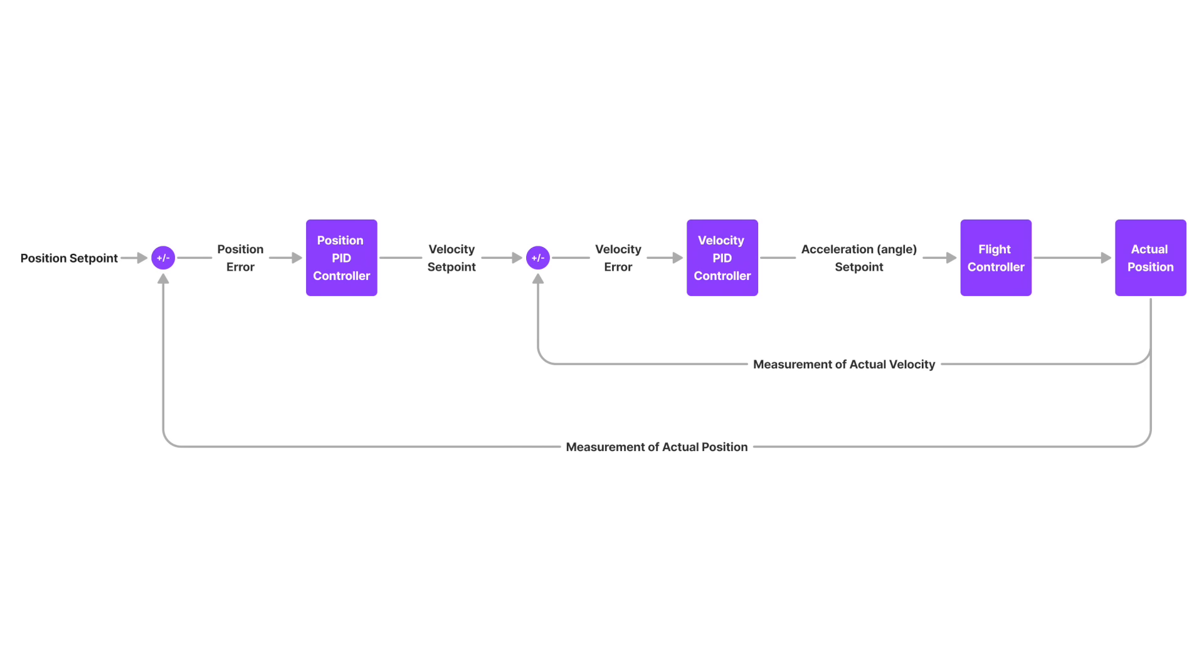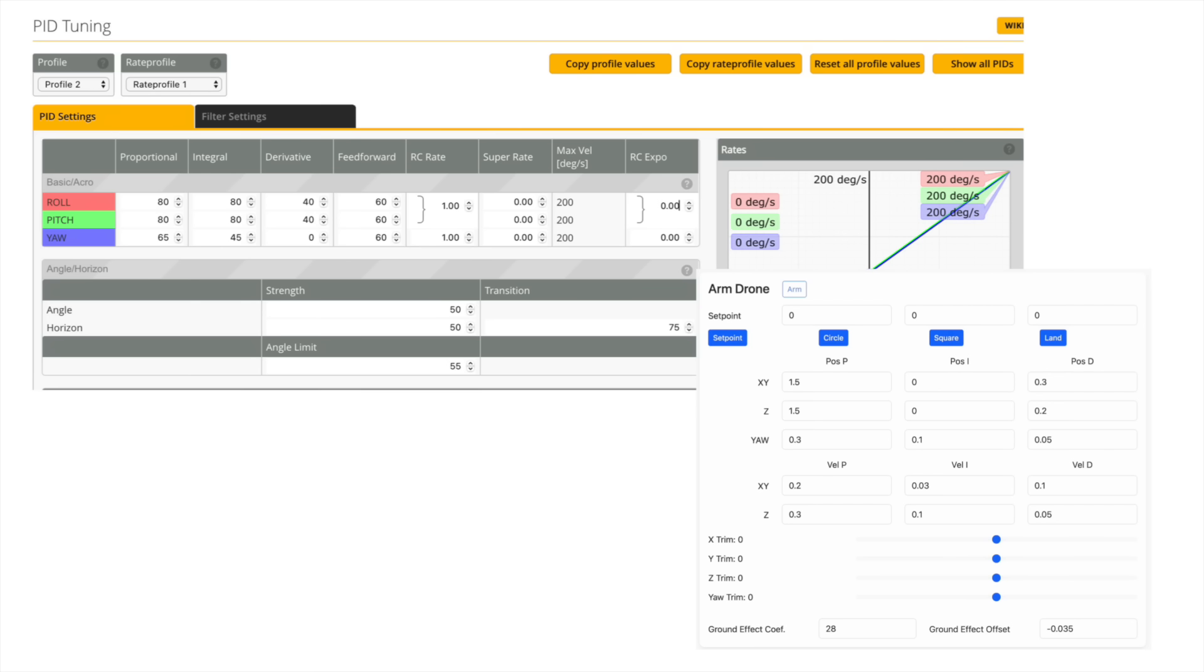As I mentioned, the ESP32 runs a nested PID controller. The outer loop converts the position error to a velocity setpoint, and the inner loop converts the velocity error to an acceleration setpoint, which is essentially a joystick command. This is then sent to the flight controller, which actually runs another PID loop, so there ends up being like three dozen PID parameters to tune, which is an absolute nightmare.